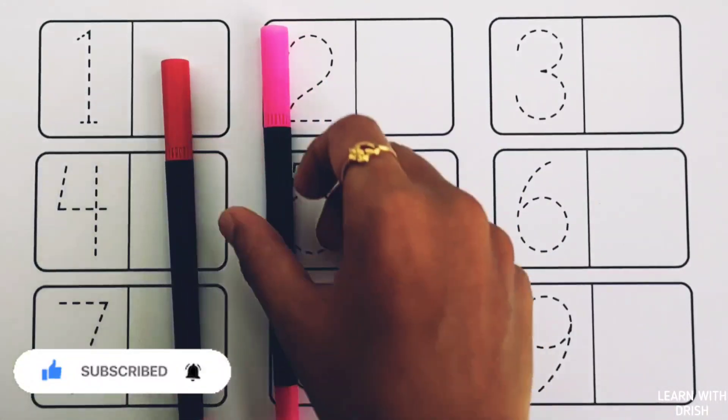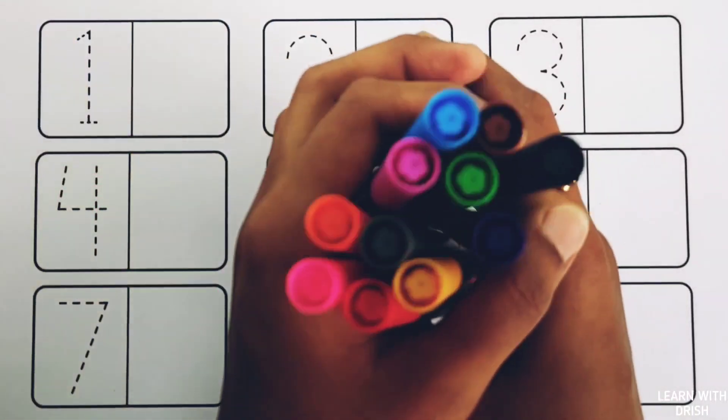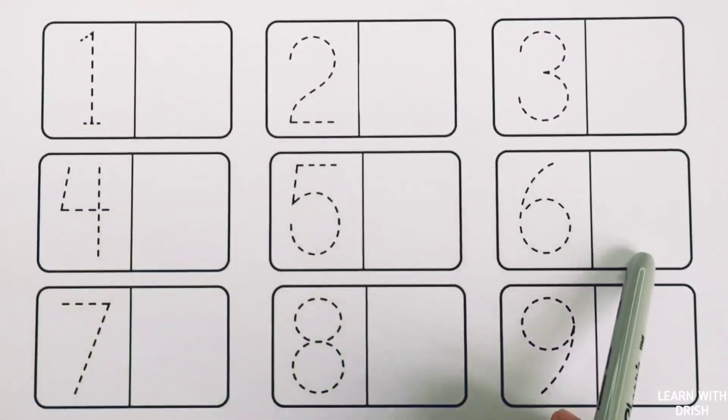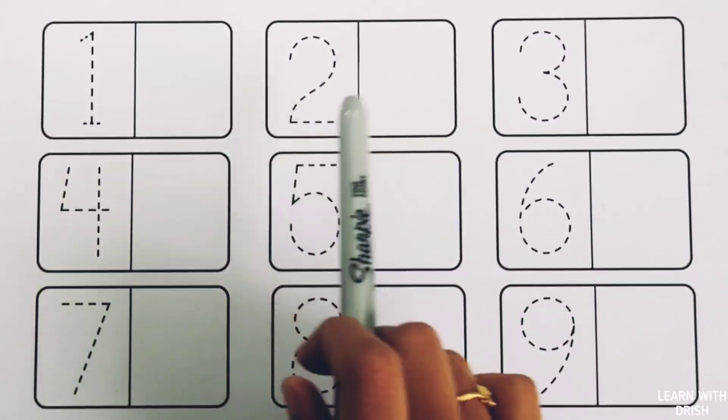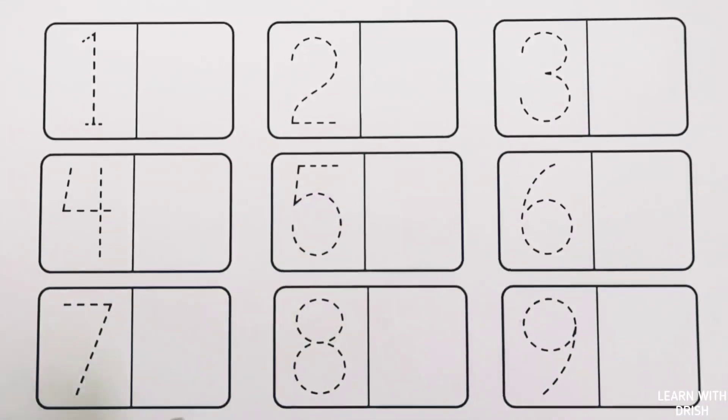Violet color, pink color, red color. Let's learn to count some numbers: one, two, three, four, five, six, seven, eight.